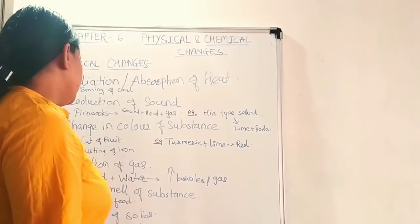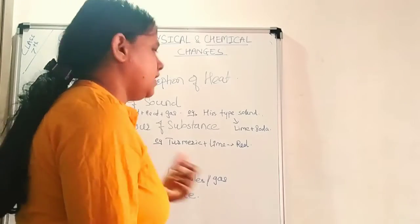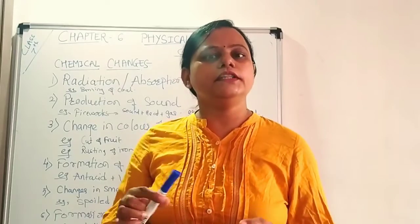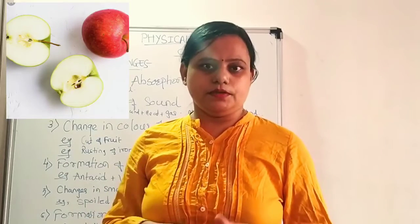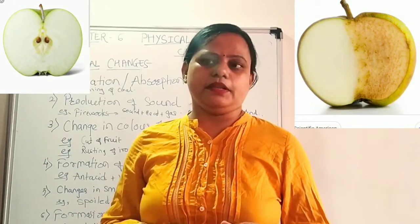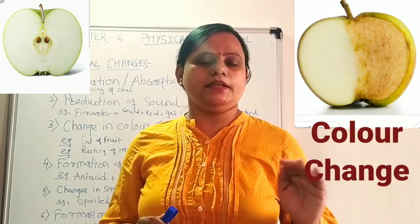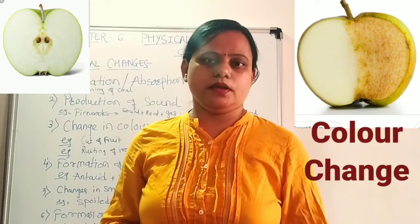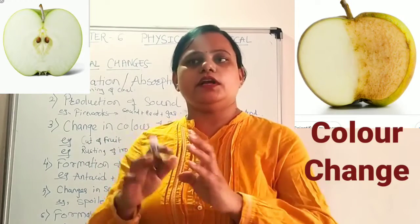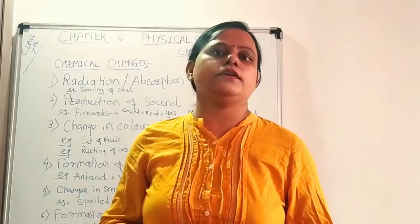The third type of change is a change in color of a substance. For example, if we cut raw fruits or vegetables and keep them aside for about half an hour, the upper layer turns brown. This happens because the oxygen in the air reacts with the fruit, and a color change starts to occur.